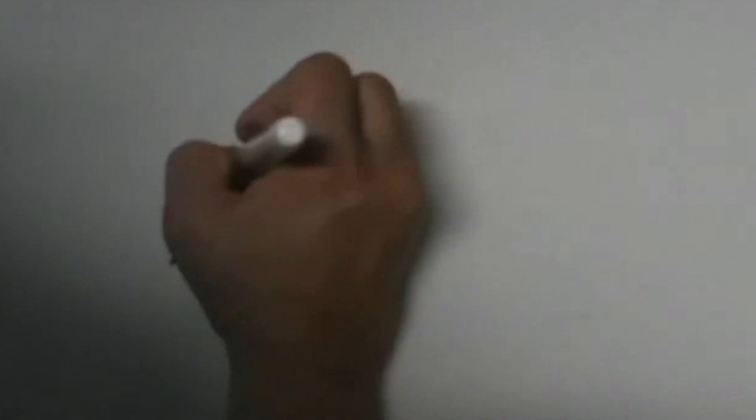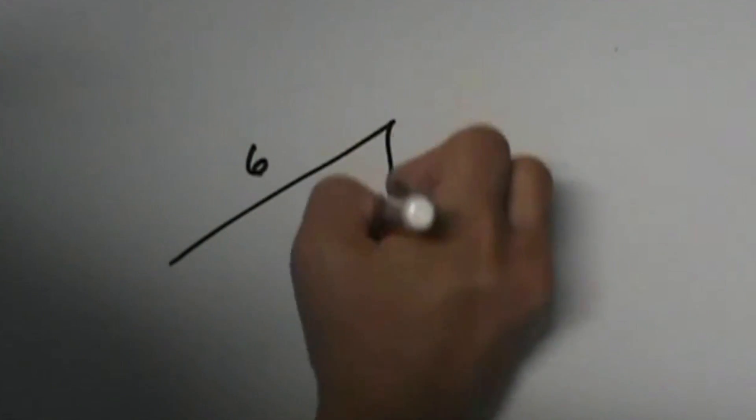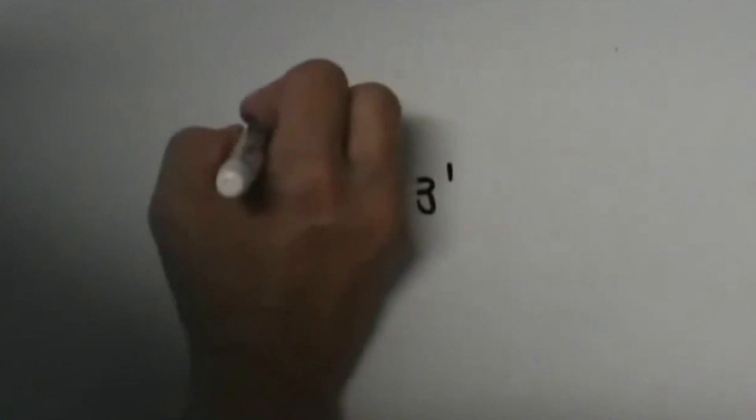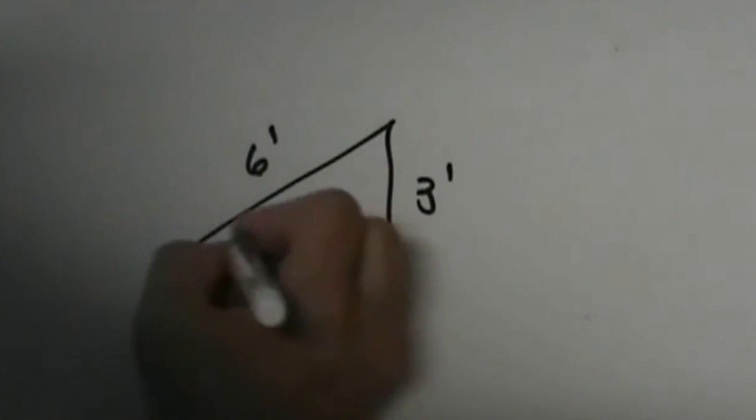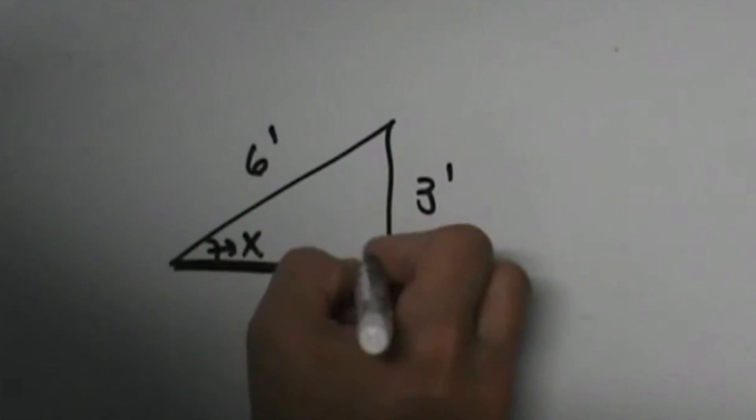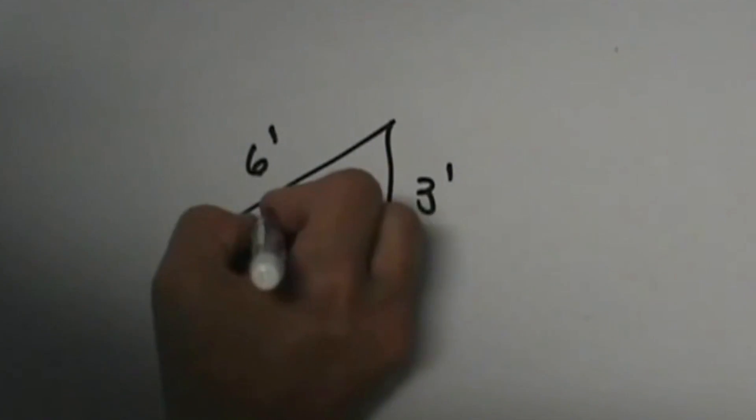The bar ramp is 6 feet long and 3 feet high. What is the angle of elevation? Here is the unknown angle. Remember, elevation is from the horizontal up. That is in degrees.